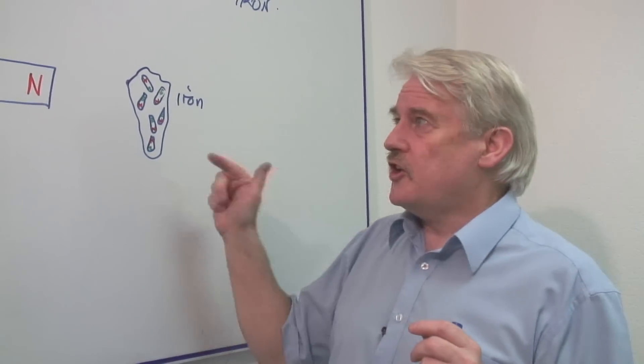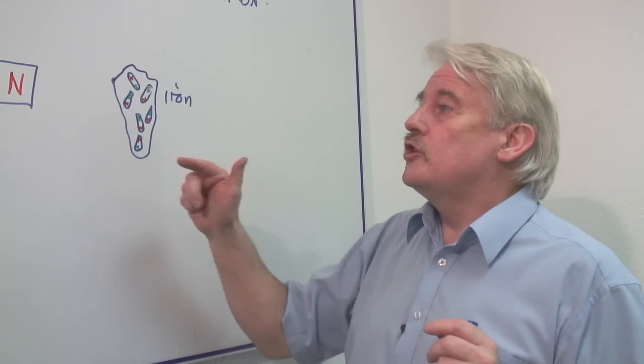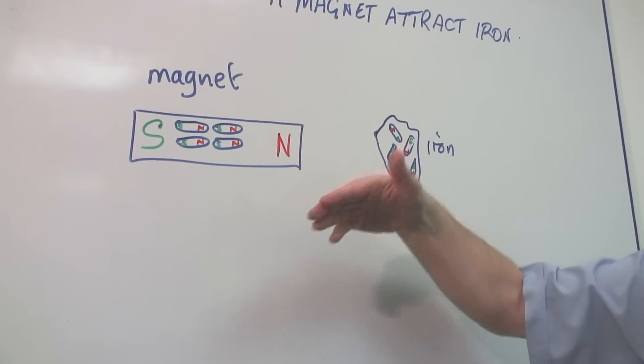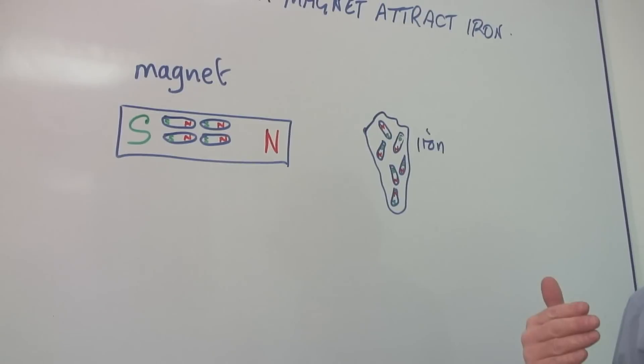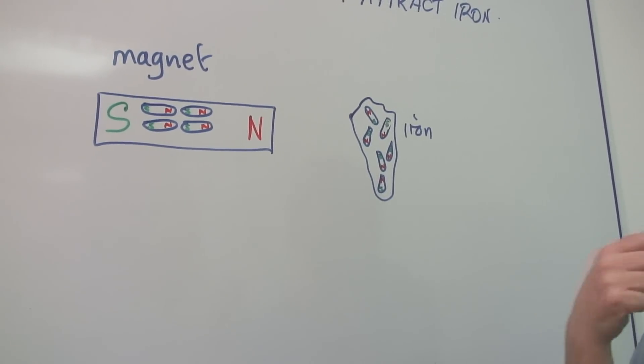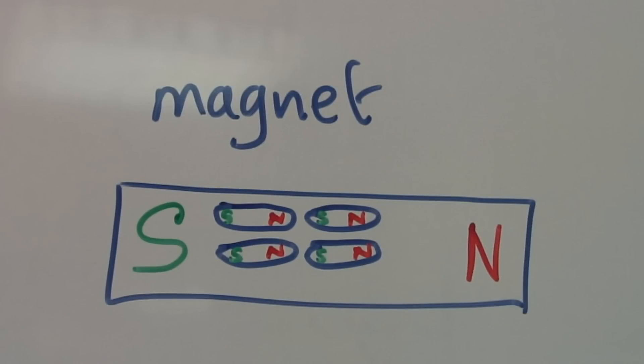The significance of iron is that when you actually put a magnet next to it or you even put it in a magnetic field like through using an electric wire and make an electromagnet, the little magnets inside all line up.